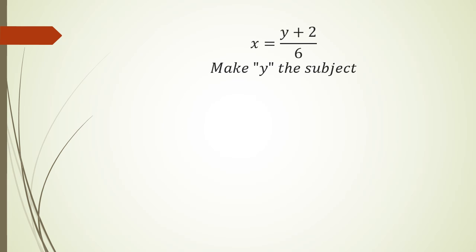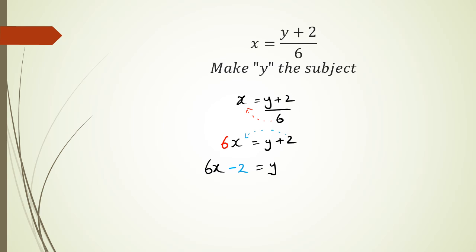Next example: x = (y + 2) / 6 — make y the subject. Since 6 is dividing on the right hand side, shifting it to the left means it becomes multiplied: 6x = y + 2. Then shifting the 2 gives the opposite sign, so y = 6x − 2.